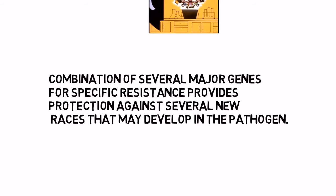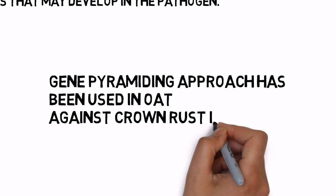Finally, the combination of the major genes will confer resistance to various pathogens. The gene pyramiding approach has been used in oat against crown rust in Canada.